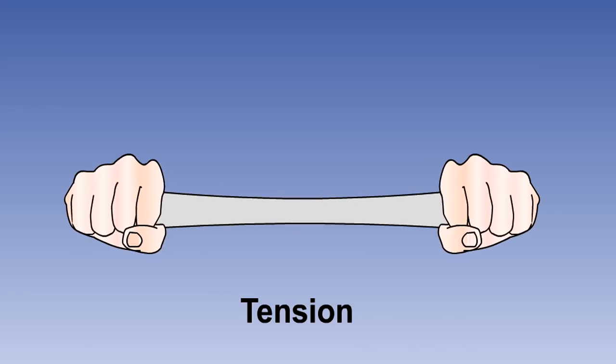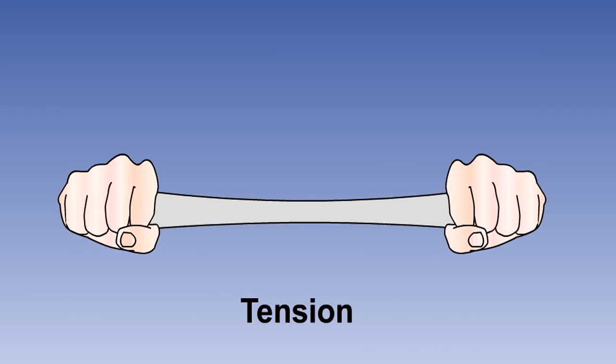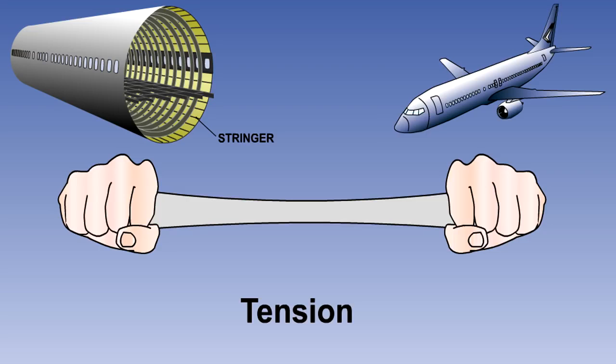A tensile load is one which tends to stretch a structural member. The member is then said to be under tension. Components designed to resist tensile loads are known as ties. Good examples of ties are the stringers, which in modern aircraft take the tensile loads produced in the fuselage structure by pressurization.